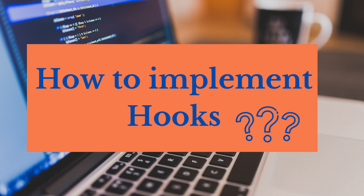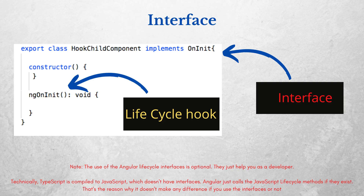Now that we understand what lifecycle hooks are, the next point is how to implement them. Lifecycle hooks can be implemented by interfaces provided in the Angular core library. For example, ngOnInit is one lifecycle method — to implement it, we have the OnInit interface. Every interface contains a different lifecycle hook method named with the interface name and prefixed with 'ng'. So the interface is OnInit and its lifecycle hook method is ngOnInit. For any lifecycle hook, there is a dedicated interface to implement that provides the specific method.